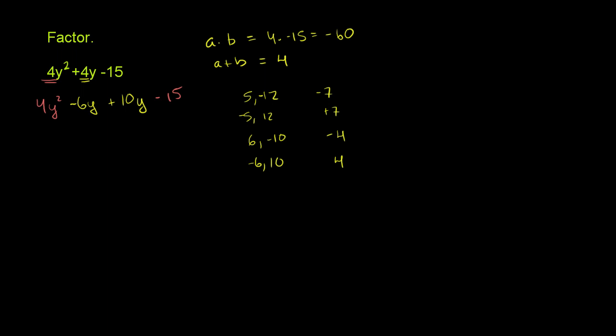Now this is where the grouping comes in. You group the terms. So if I take these two guys, what can I factor out of those two guys? Well, there's a common factor. It looks like there's a common factor of 2y. So if we factor out 2y, we get 2y times 4y squared divided by 2y is 2y, and then negative 6y divided by 2y is negative 3. So this group gets factored into 2y times 2y minus 3.